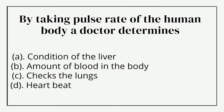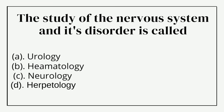By taking the pulse rate of the human body, a doctor can determine — option A: condition of the liver, option B: amount of blood in the body, option C: checks the lungs, option D: heartbeat. The correct answer is option D: heartbeat.